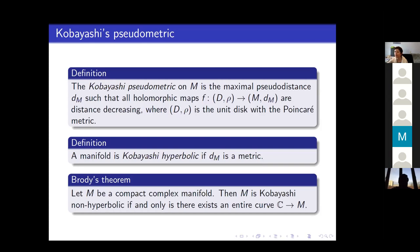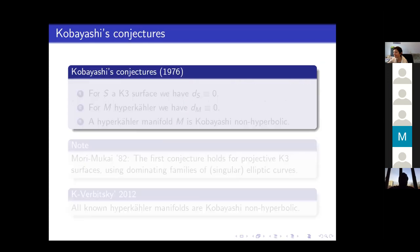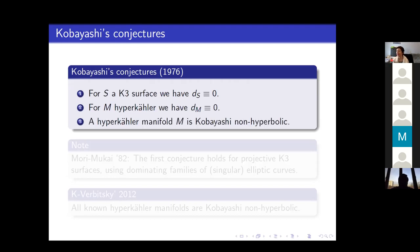Basically, if you have rational or elliptic curves on your manifold, then it is automatically Kobayashi non-hyperbolic. We are going to be interested in Kobayashi non-hyperbolic manifolds. In 1976, Kobayashi made the following conjectures: for a K3 surface, the Kobayashi pseudo-distance is identically zero. He made the same conjecture for Calabi-Yaus, but we'll prove it for hyperkählers because for Calabi-Yaus it's more difficult.